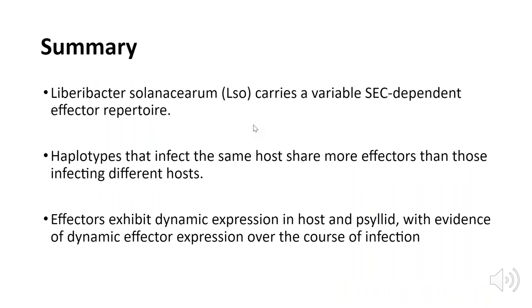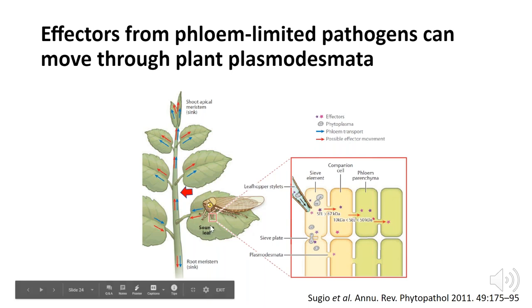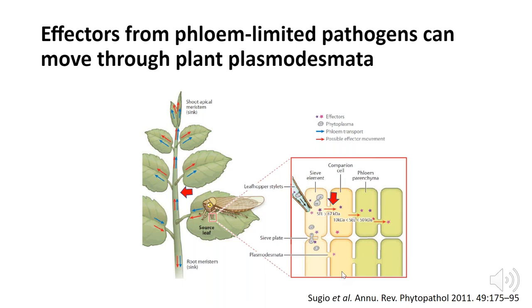In summary, I showed that LSO carries a variable sec-dependent effector repertoire. I also showed that haplotypes infecting the same host share more effectors than those infecting different hosts. And I showed that effectors exhibit dynamic expression in the host and psyllid, with evidence of dynamic effector expression over the course of infection. Now I'd like to focus on how these effectors actually manipulate the plant. We know phytoplasma and liberibacter effectors are mobile — they can move far from the point of infection in the phloem and cell to cell via plasmodesmata.